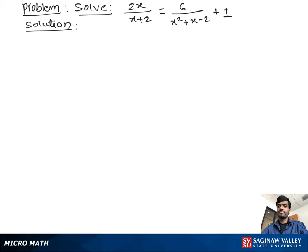Solve 2x over x plus 2 is equal to 6 over x squared plus x minus 2, plus 1. Let's write the problem again: 2x over x plus 2 is equal to 6 over x squared plus x minus 2, plus 1.